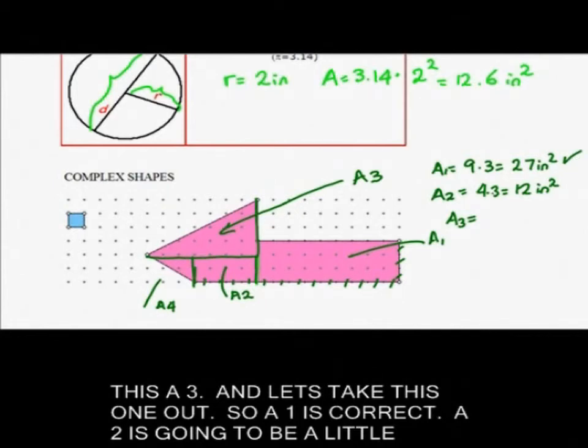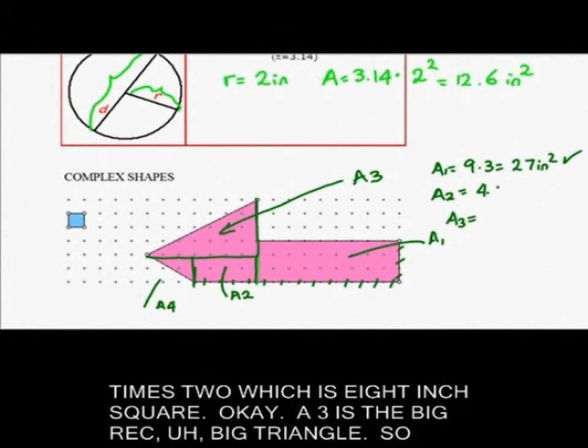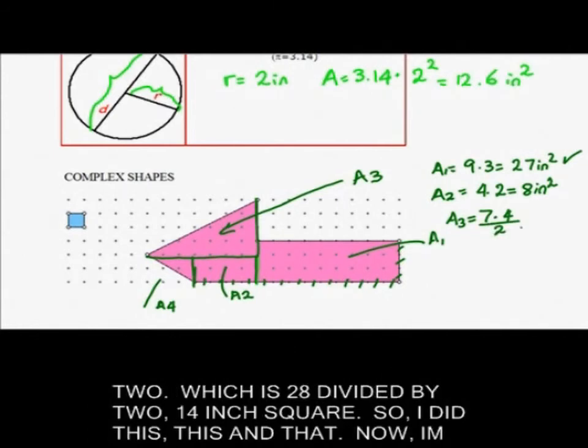A2 is going to be a little different because that's too big right now. So I'm going to take A2 is 1, 2, 3, 4 times 2, which is 8 inch square. A3 is the big triangle. So that's 1, 2, 3, 4, 5, 6, 7 times height 1, 2, 3, 4 divided by 2, which is 28 divided by 2, 14 inch square.